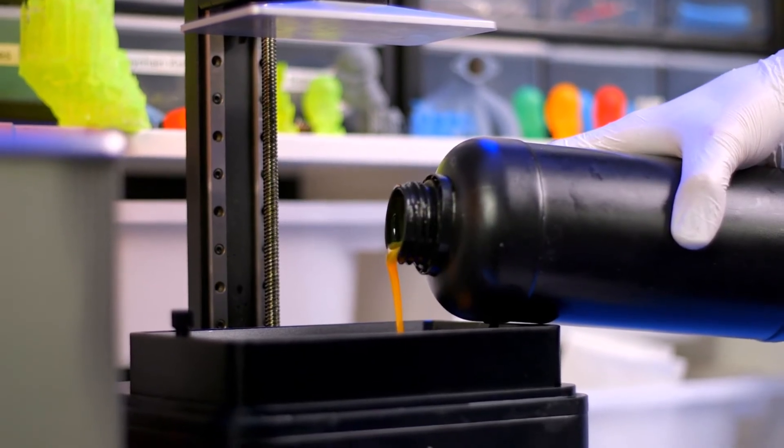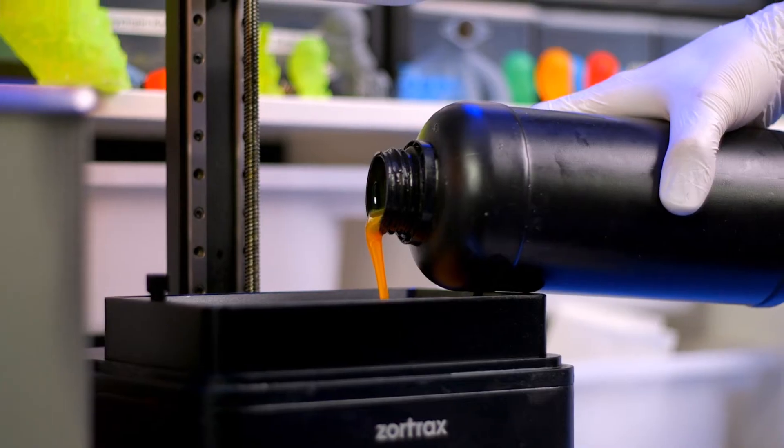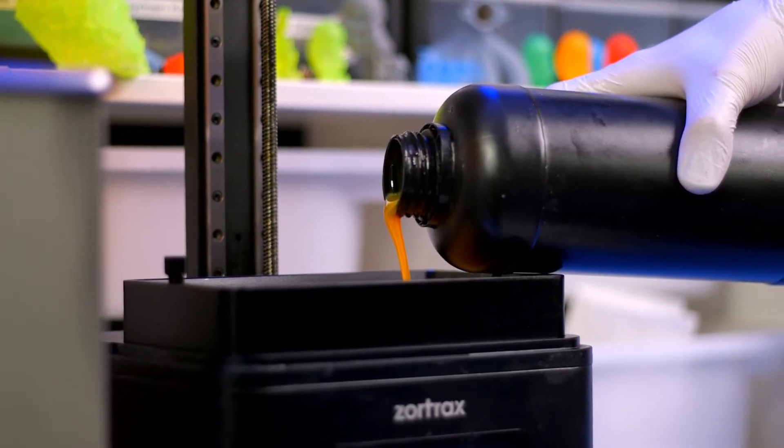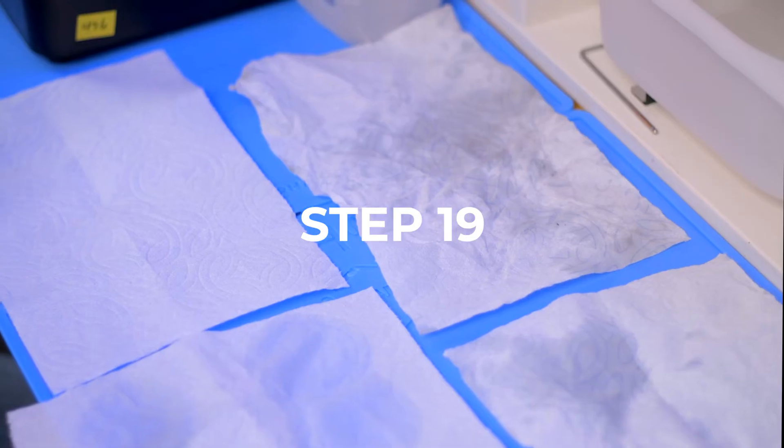Step 18: Carefully pour resin in up to the max fill line. If you have upgraded your build plate in some way that increased its overall thickness, be sure to leave enough room to account for that and not have it spill over.